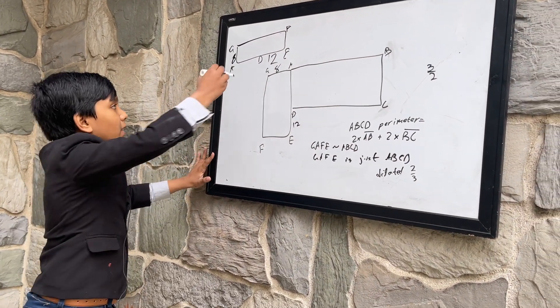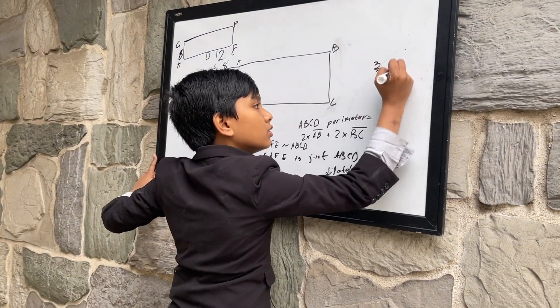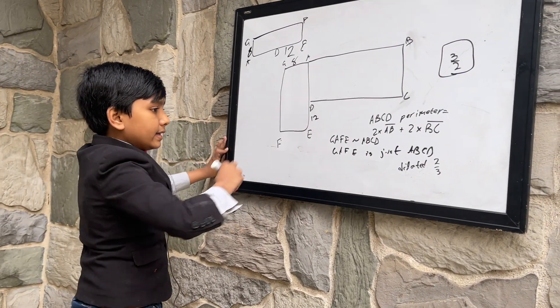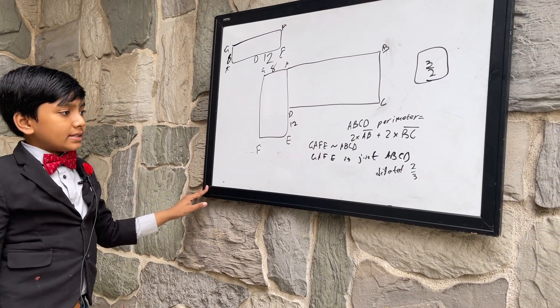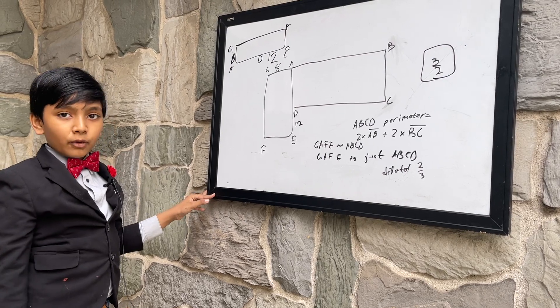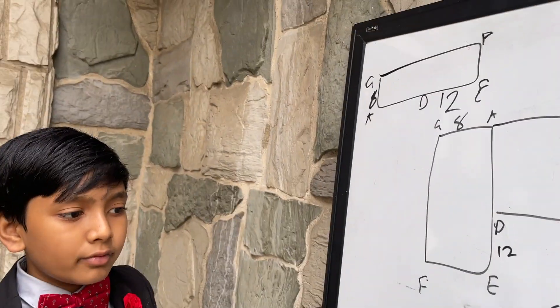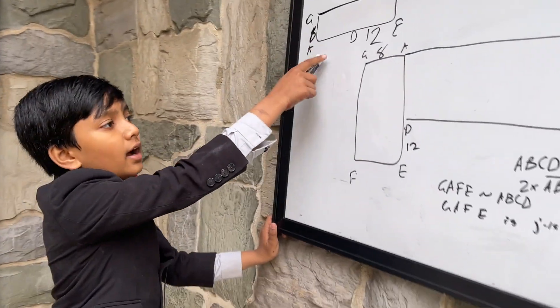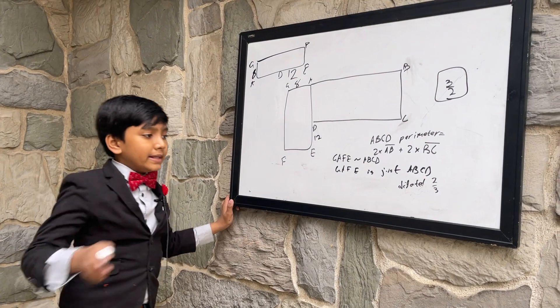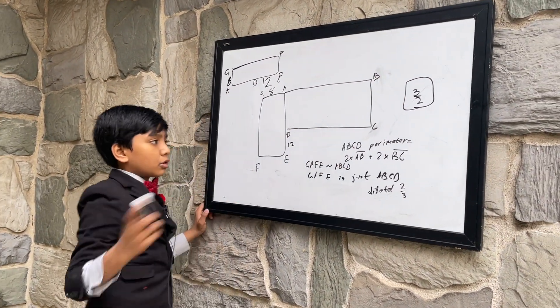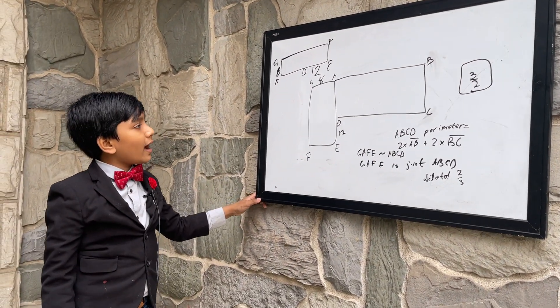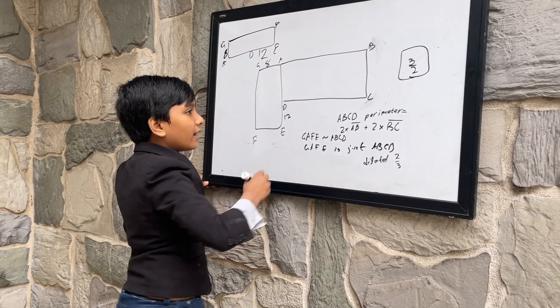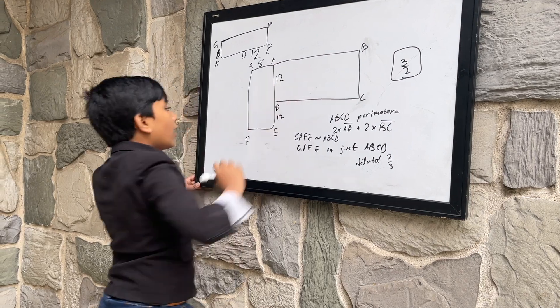Meaning, we have to multiply it by three over two in order to get AD. Another way of explaining it is we essentially have to reverse the transformations that have already happened. So, we need to rotate it back negative 90 degrees, which we've already done. And we need to dilate it by the inverse of two thirds, or three halves. So, now, that means that since GA is eight, multiplying it by three halves will give us 12 for AD.